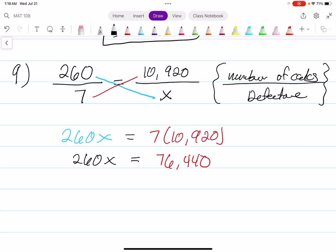Once again, to solve for X, you're going to divide both sides by 260. 260 simplifies out. X equals 294. That means 294 defective calculators. Speaking of defective, my spelling is defective.